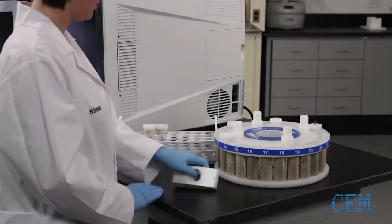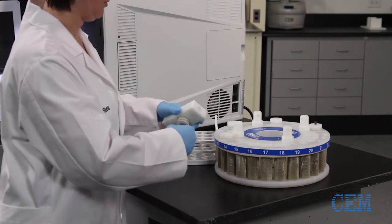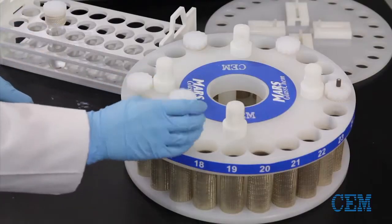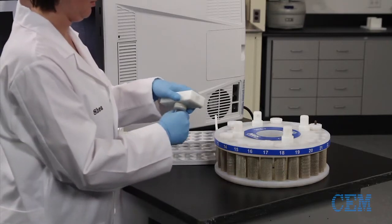To begin preparing the carousel or turntable, insert the vessels into the sleeves which should already be installed in the carousel. Using the preset torque tool, tighten the top of each vessel until the tool makes an audible click.